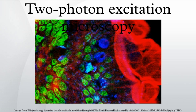Two-photon microscopy was pioneered by Winfried Denk in the lab of Watt W. Webb at Cornell University in 1990. He combined the idea of two-photon absorption with the use of a laser scanner. In two-photon excitation microscopy, an infrared laser beam is focused through an objective lens. The Ti:Sapphire laser normally used has a pulse width of approximately 100 femtoseconds and a repetition rate of about 80 MHz, allowing the high photon density and flux required for two-photon absorption and is tunable across a wide range of wavelengths.